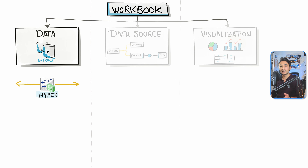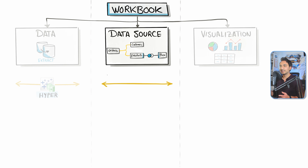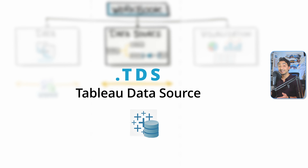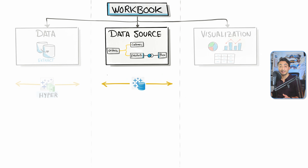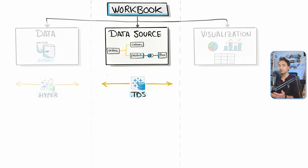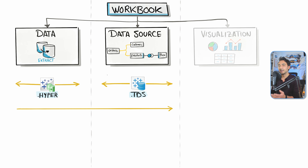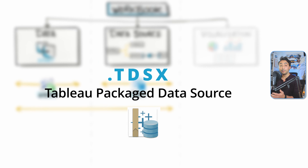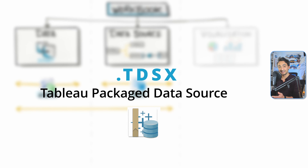If you've done a lot of work in the data source — built a data model, renamed stuff, done aggregations, created new columns — and you'd like to share that with colleagues but are not allowed to share the actual data, you can share the data source alone. We call this the Tableau Data Source, TDS, without data. Alternatively, if your colleagues don't have access to source systems and you don't mind sharing your data, you can send a package of the extract and the data source — the Tableau Packaged Data Source, TDSX.